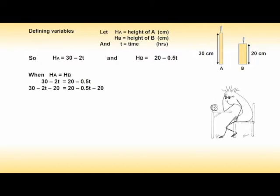Remove the plus 20 on the right hand side by subtracting 20. Do the same to both sides. Cancel, giving 10 minus 2t equal to minus 0.5t.